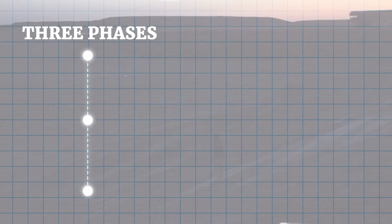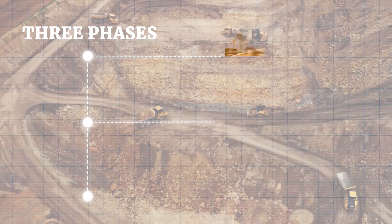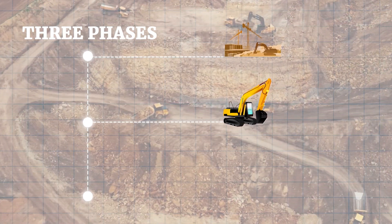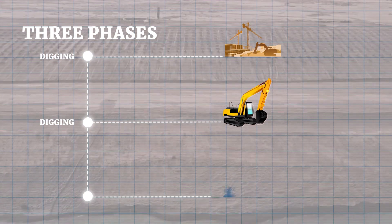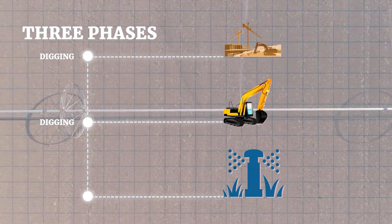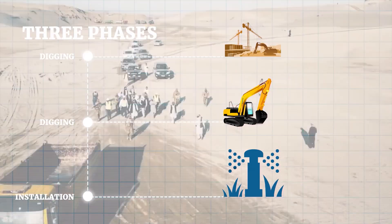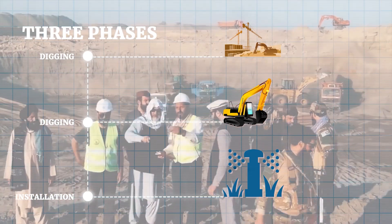The project is said to be completed in three phases. The first and second phases involve the actual digging of the canal, while the third phase is dedicated to the installation of water irrigation systems and other infrastructure.